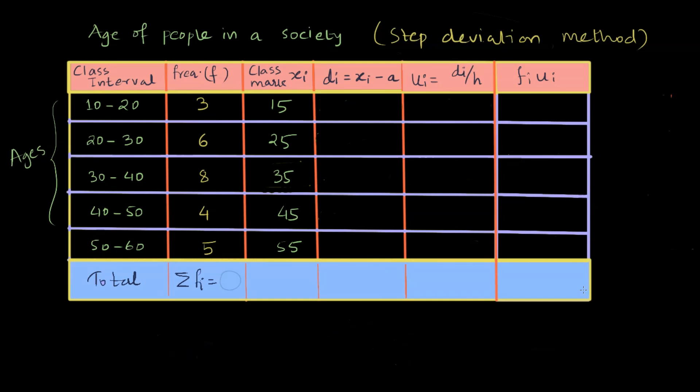We have taken an example here where we are looking at ages of people in a society. We just need to write ages on the left hand side column where we have class interval written. It shows ages in different rows.